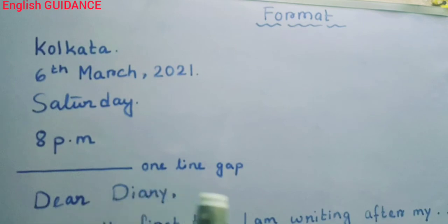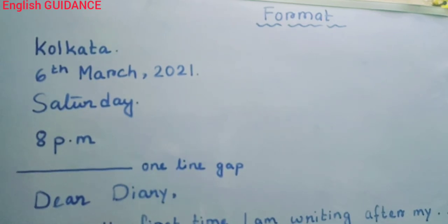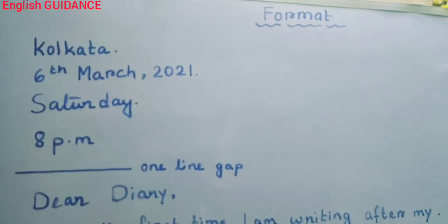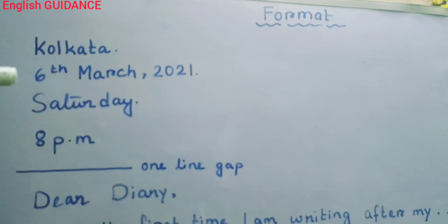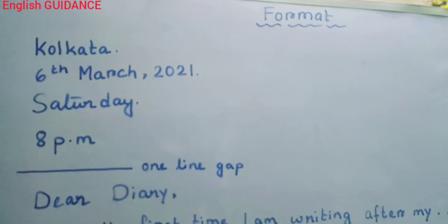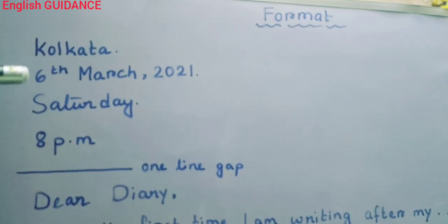After that, you have to give one line gap and then write 'Dear Diary,' followed by a comma. Remember, children, you usually make mistakes in the date portion. You generally write 6.03.21 — that is the wrong format, not acceptable. You have to write the date in the full format only.